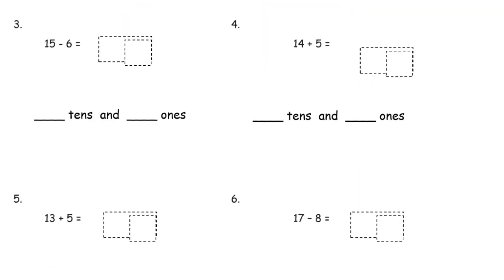Number 3, 15 minus 6. We could think of this 6 as a 5 and a 1, so 15 minus the 5 would just leave us with the 10 and then one more would get us down to 9. Or you could just draw it, 1 through 15, cross out 6, you're going to have 4 left here and 5 here, 4 plus 5 is 9. So there's 9 ones left, but there's 0 tens.